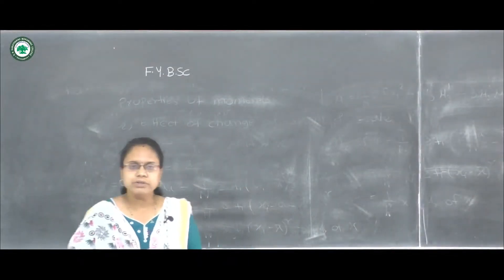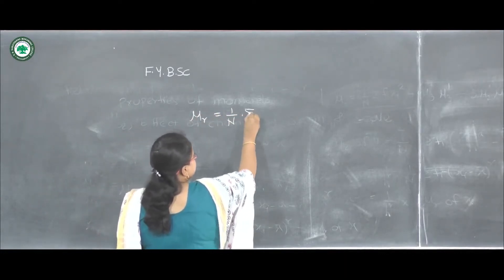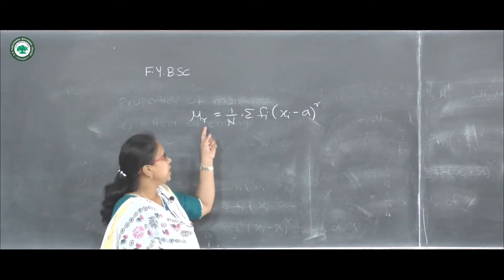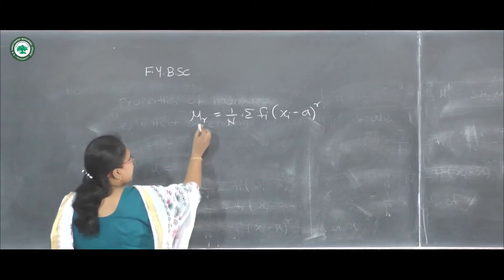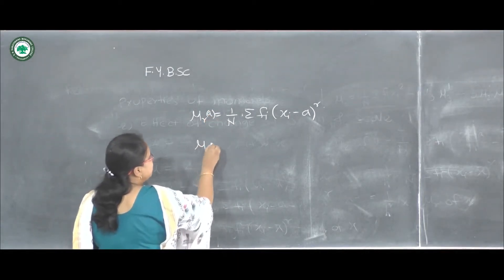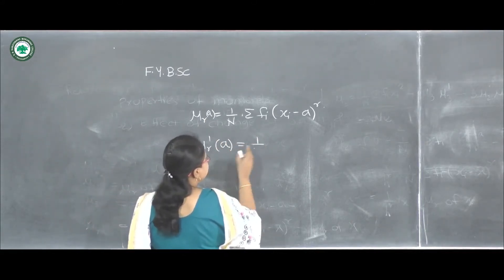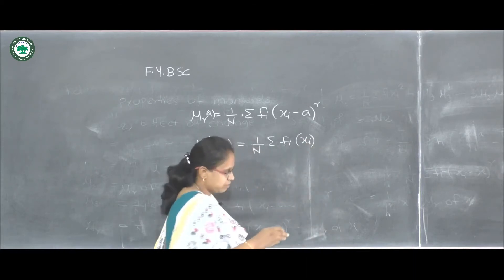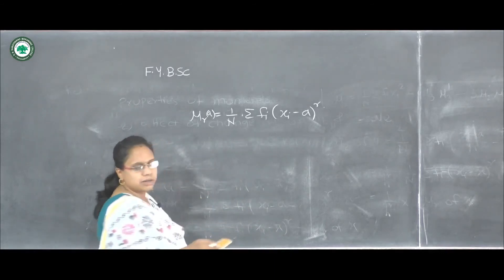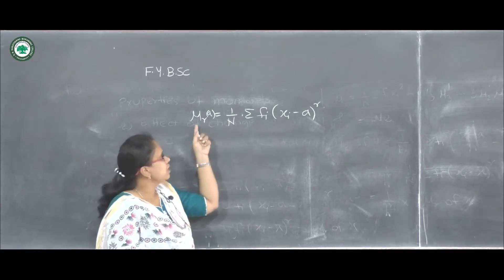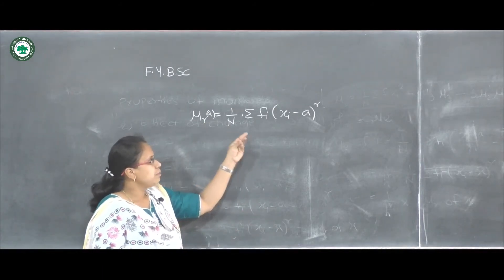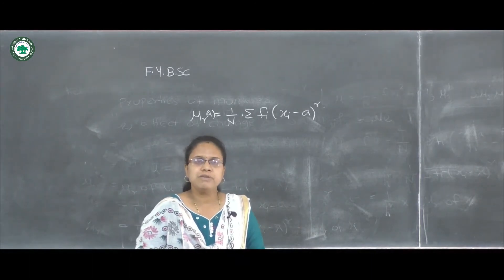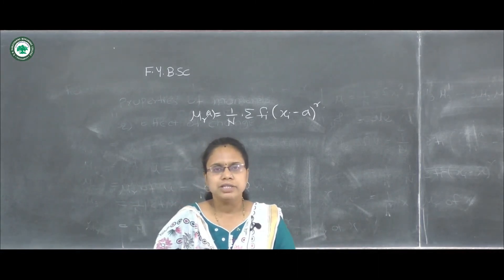Further, by putting different values of a we can define moments about any point a, denoted μr(a), and obtain raw moments about a using the corresponding formula. We can also obtain the relation between central moments and raw moments about point a. Today we have learned the topic of moments. In the next lecture we will study the skewness and kurtosis of data. Thanks for watching.